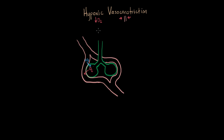The hypoxic part is really referring to what happens in this green air space. For some reason having to do with the lungs, we're low in oxygen there. And the vasoconstriction has to do with the blood vessel system — you can see how it floats around the lung tissue. It's a cause and effect relationship: because of hypoxia, something happens to our blood vessel.